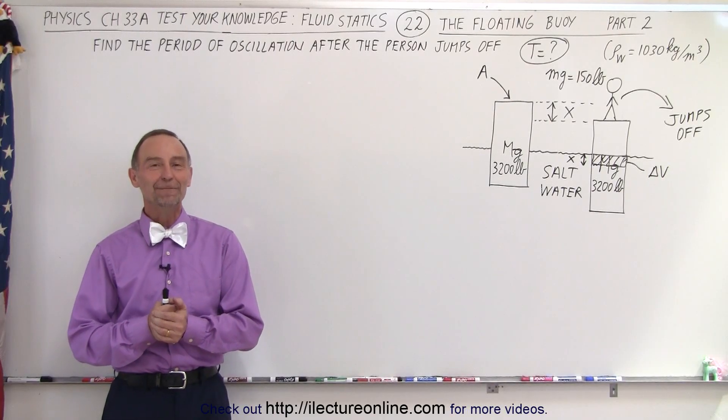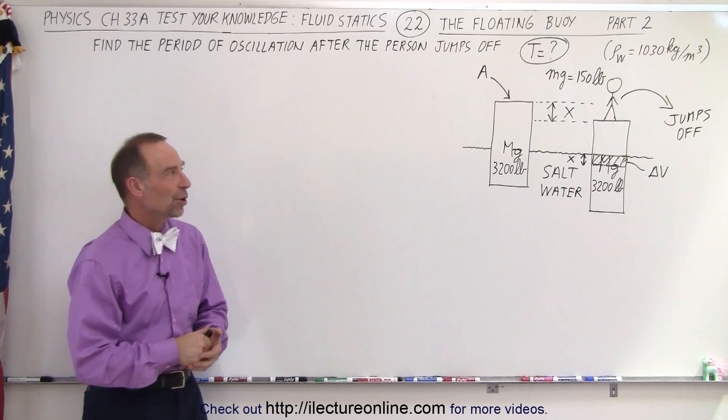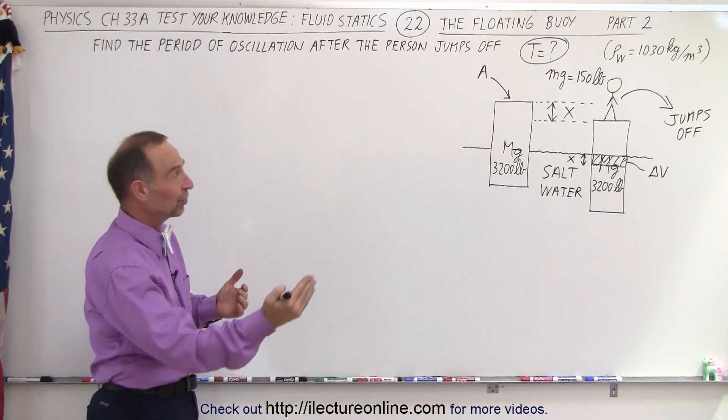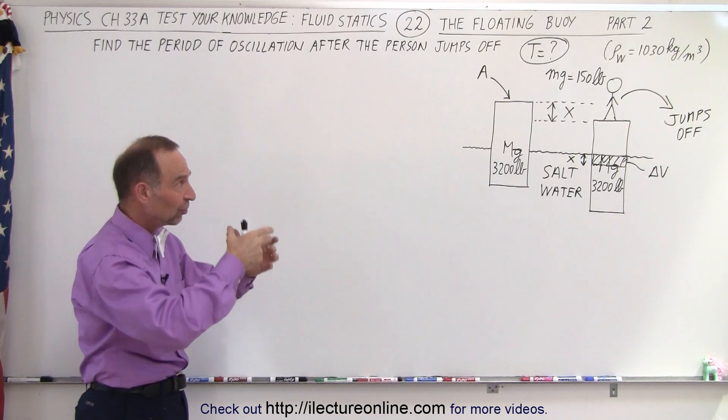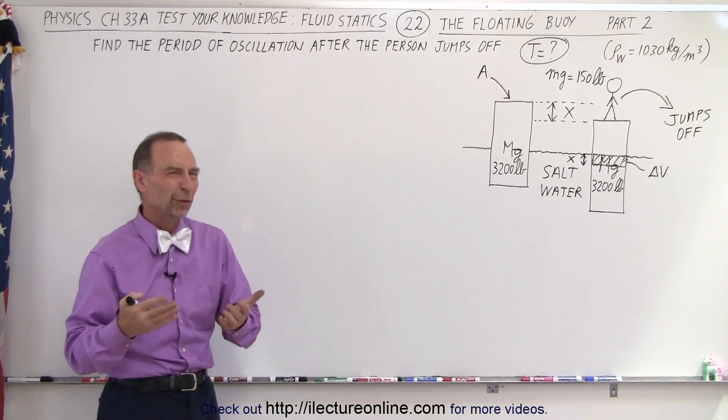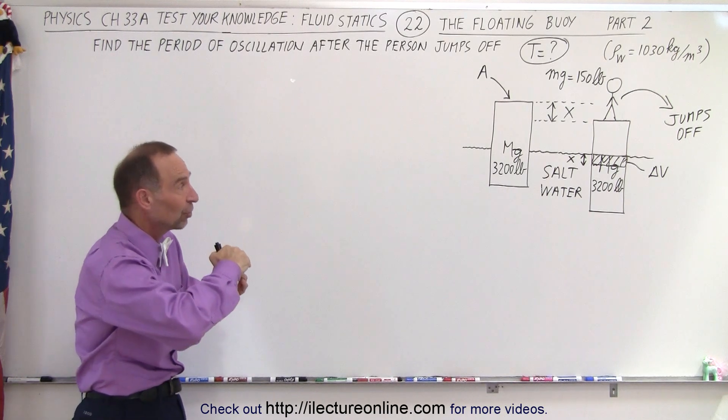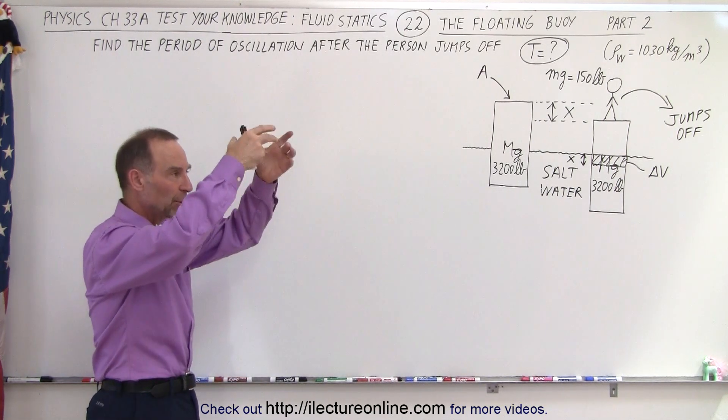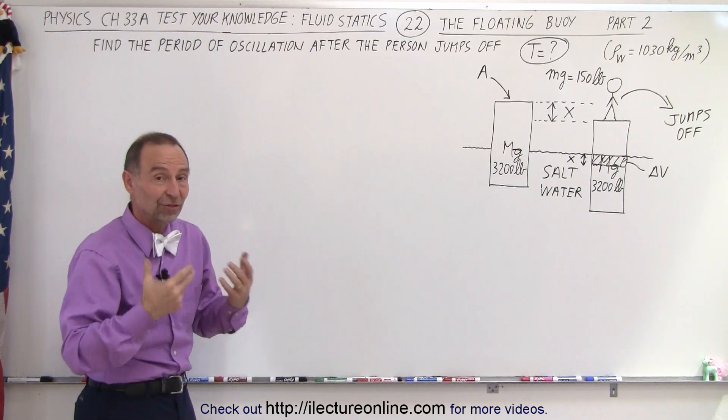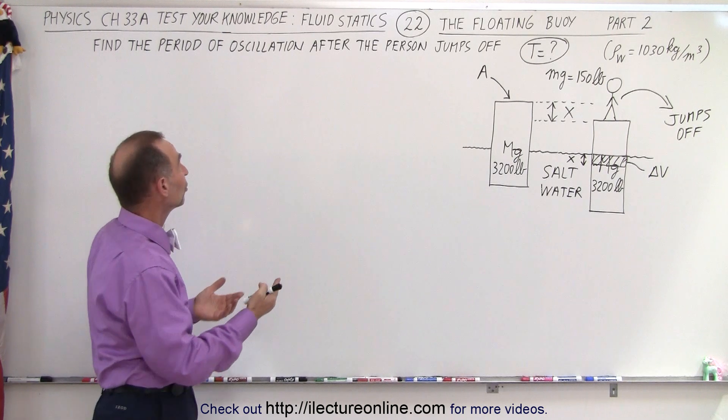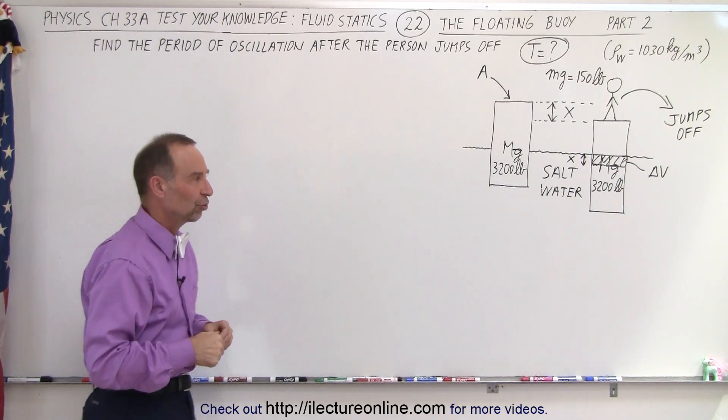Welcome to Electronline. Now let's do part B of the problem we did in the previous video. We noticed that when a person gets on to that 3,200 pound buoy, it pushes it down an additional one-third of a foot. But what happens now when the person suddenly jumps off? The buoy will come back up but will start oscillating in simple harmonic motion, and the question is: what will be the period of that oscillation after the person jumps off?